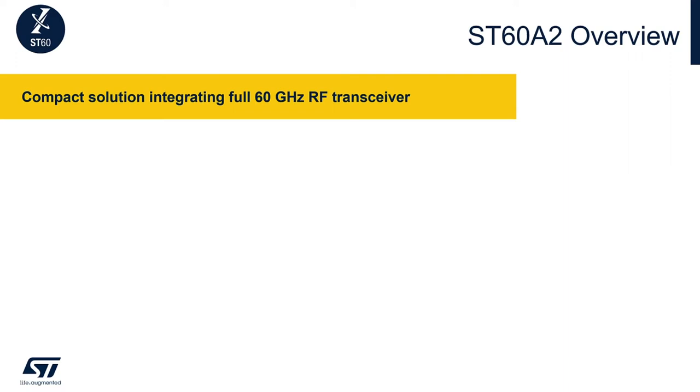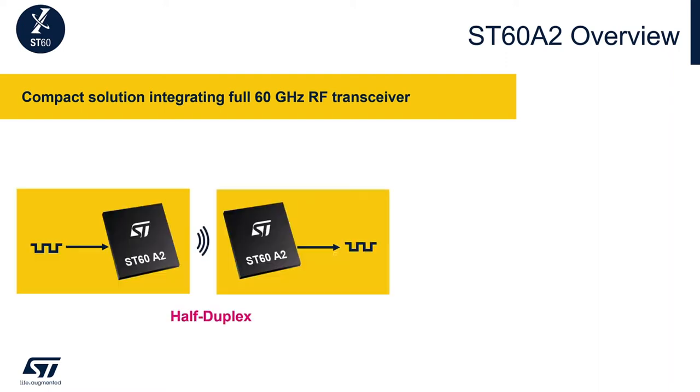It is used to create 60 gigahertz point-to-point ultra low power contactless links. ST60 A2 is the first in the family. You would need a pair of these devices to create a half duplex link between two digital systems at a very short distance.